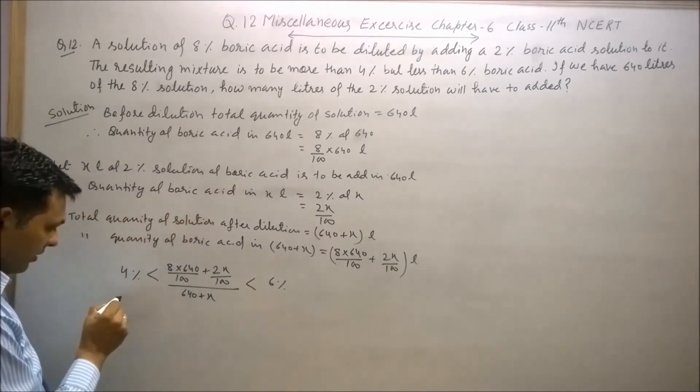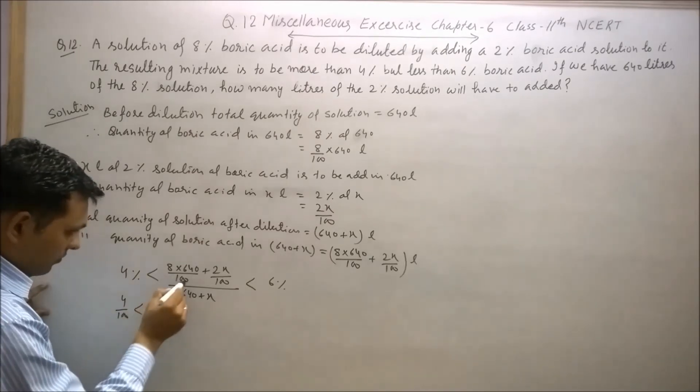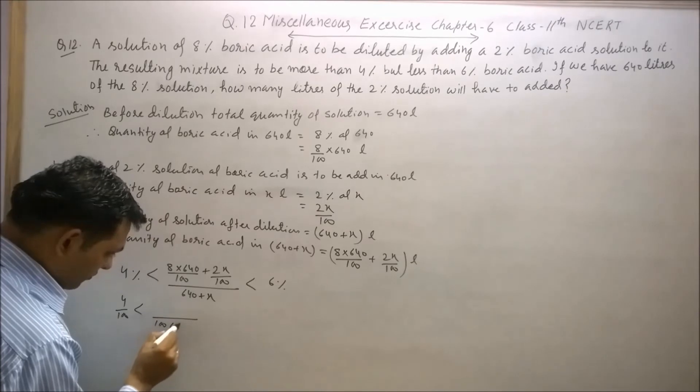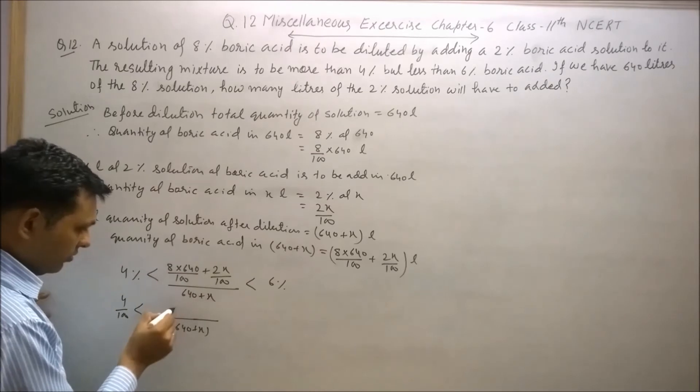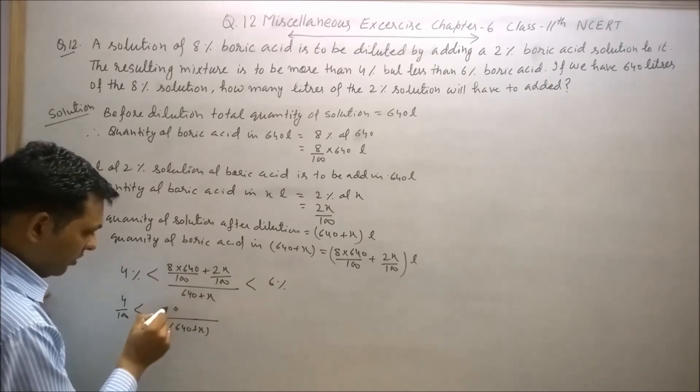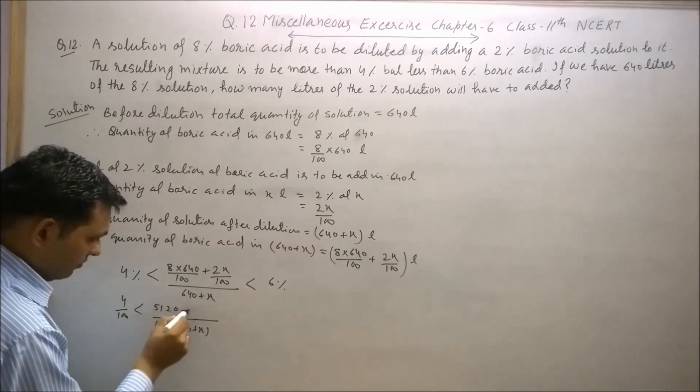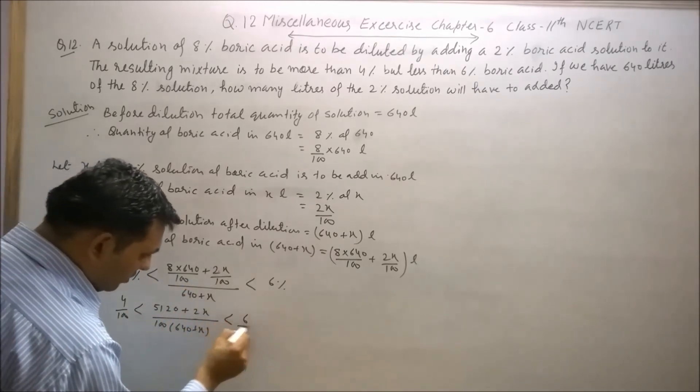4% can be written as 4 by 100, and 6% can be written as 6 upon 100.